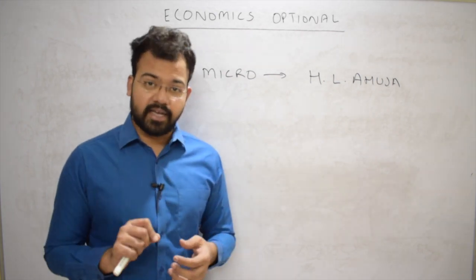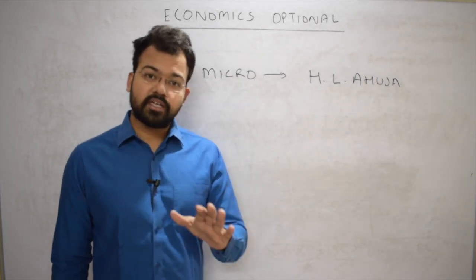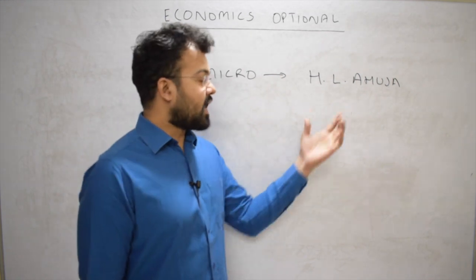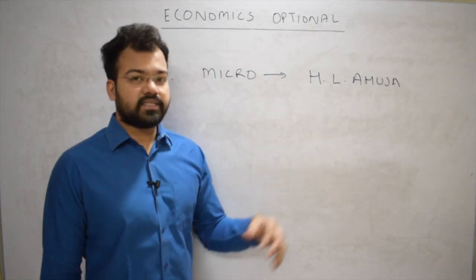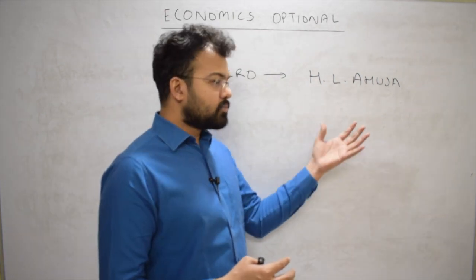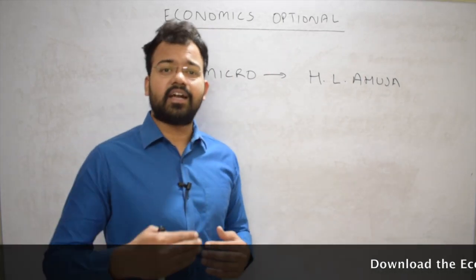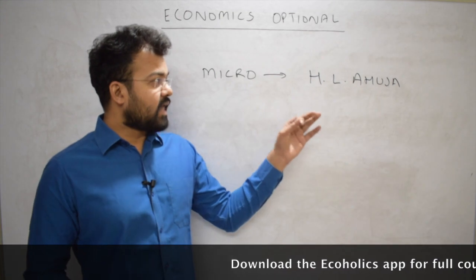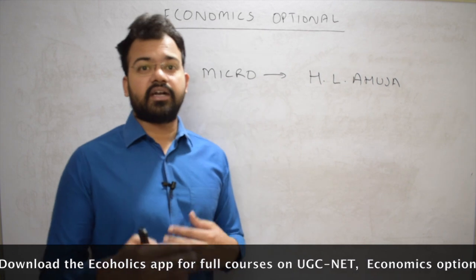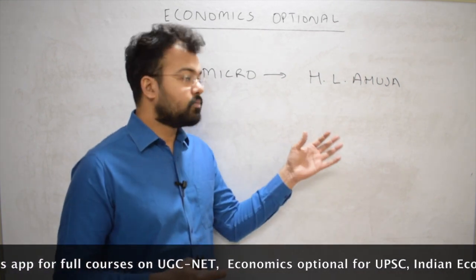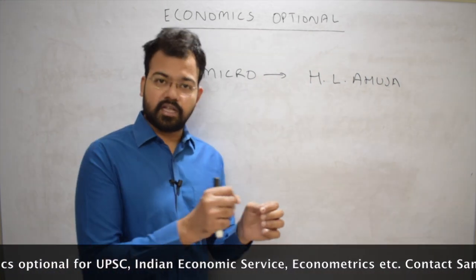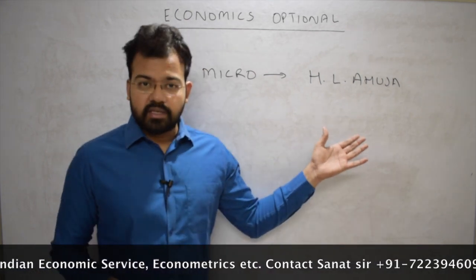Read only the topics that coincide with the syllabus and the index of this book. The book is written elaborately — there is some repetition — so it can effectively be cut down to one third of its size. But if you are a beginner starting with microeconomics, it is the best book to read. Just mark the topics that coincide with the syllabus. HL Ahuja is the best option for microeconomics.